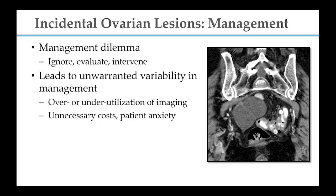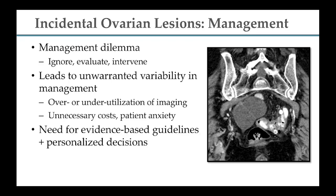This leads to unwarranted variability in the management of these lesions — sometimes over- or under-utilization of imaging, unnecessary costs, patient anxiety, and sometimes procedures. Therefore, there's a need for evidence-based guidelines, and on top of that, we need to make some personalized decisions. For example, if a patient with advanced pancreatic cancer with mets everywhere comes in with an incidental ovarian lesion, it's not as important to evaluate that because such patients already have a very poor outcome.